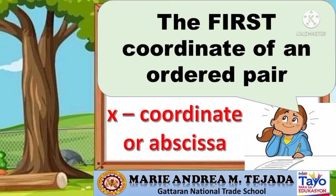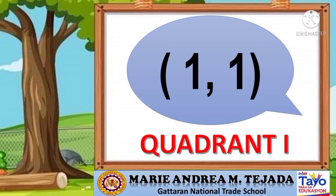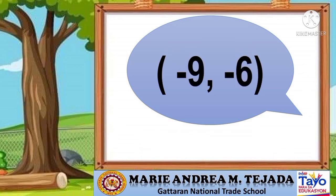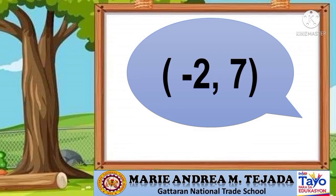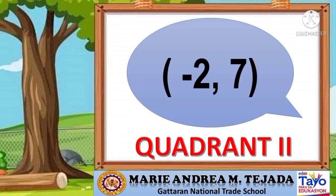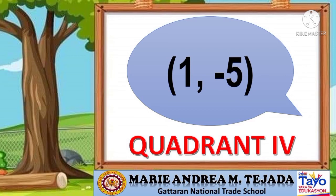You really listened to our discussion. Now let's proceed to our average round. First item: where is the location of the point (1, 1)? Correct — it is on quadrant 1. Each correct answer for the average round is worth 2 points. Next item: what is the location of point (negative 9, negative 6)? Correct — it is quadrant 3. Number 3: where is the location of (negative 2, 7)? Good job — it is on quadrant 2. The last item: where is the location of point (1, negative 5)? Correct — it is quadrant 4.